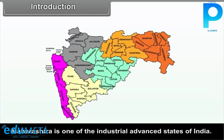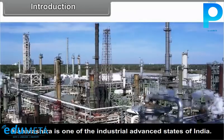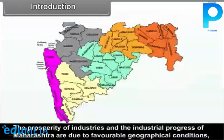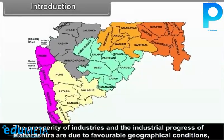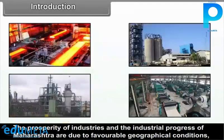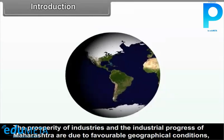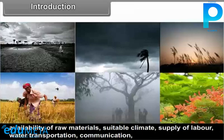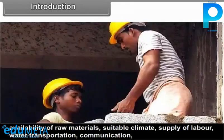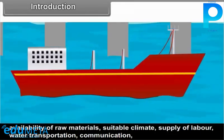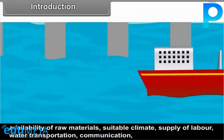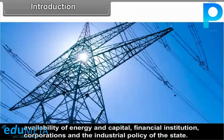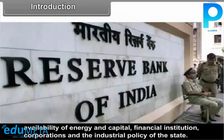Maharashtra is one of the industrially advanced states of India. The prosperity of industries and the industrial progress of Maharashtra are due to the favourable geographical conditions, availability of raw materials, suitable climate, supply of labour, water, transportation, communication, availability of energy and capital, and financial institutions.